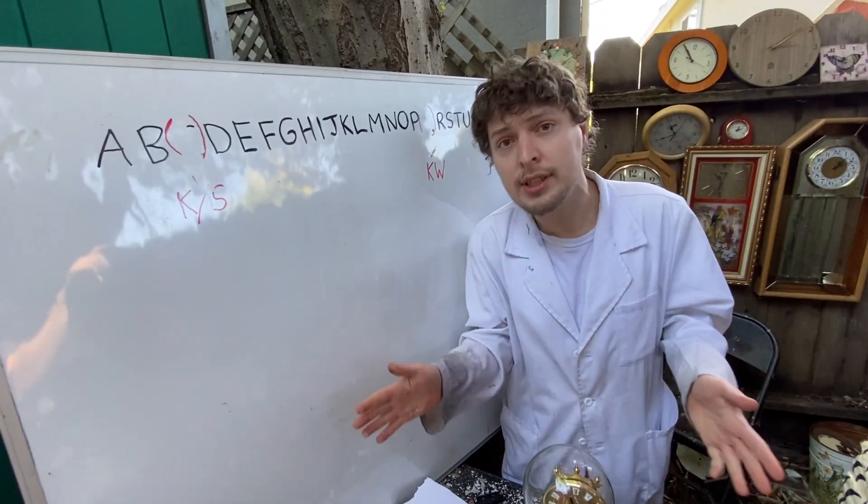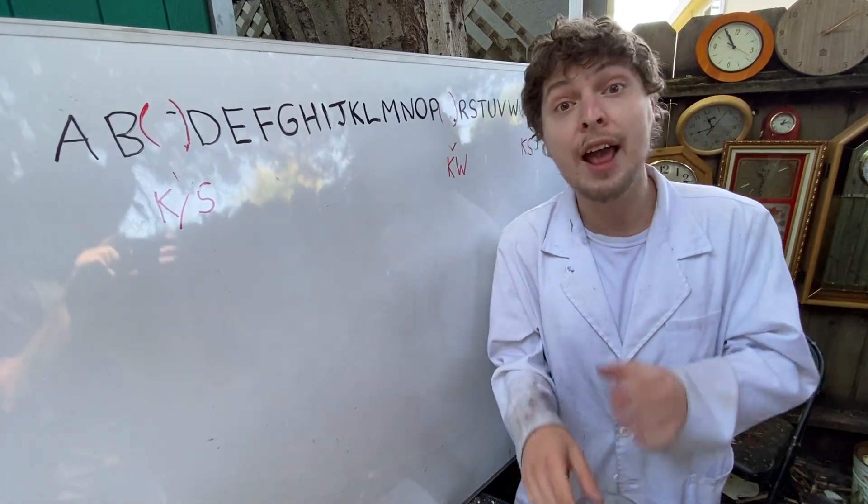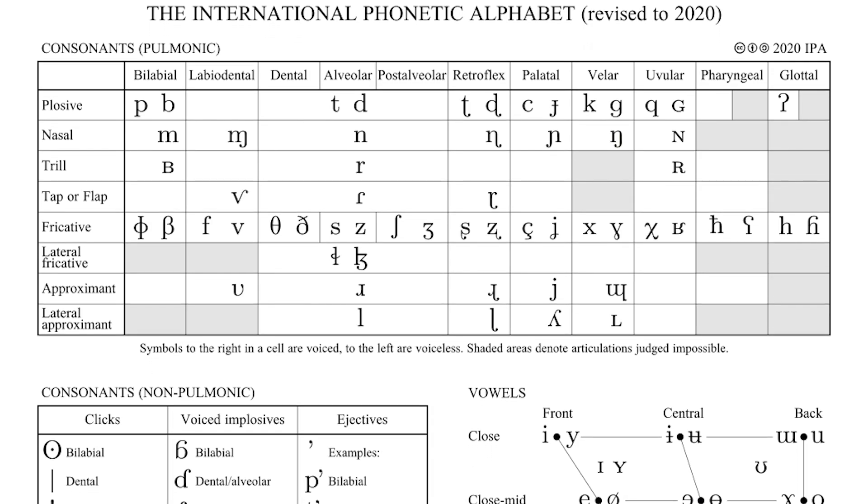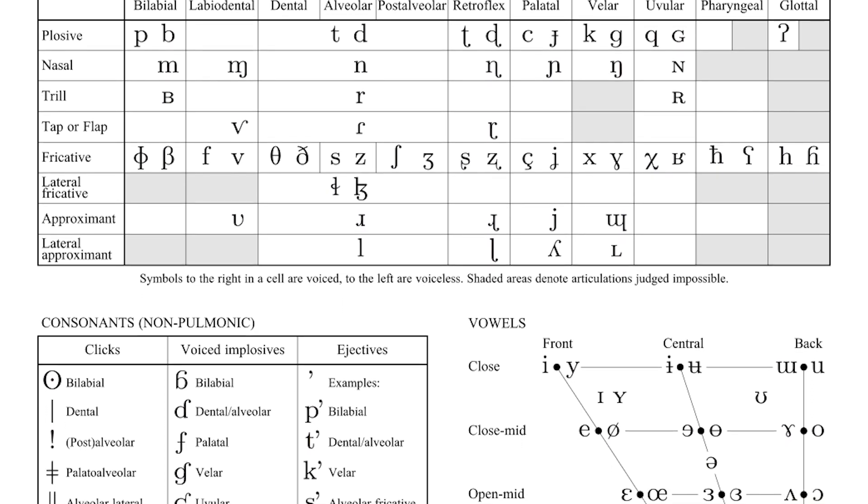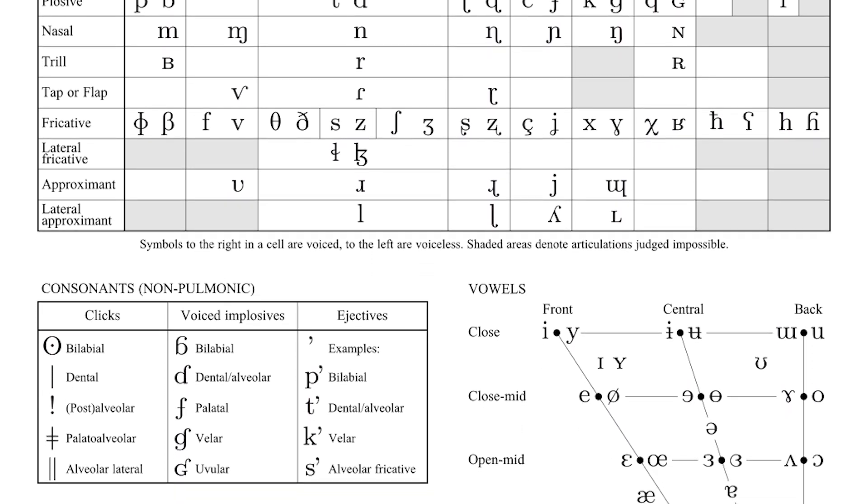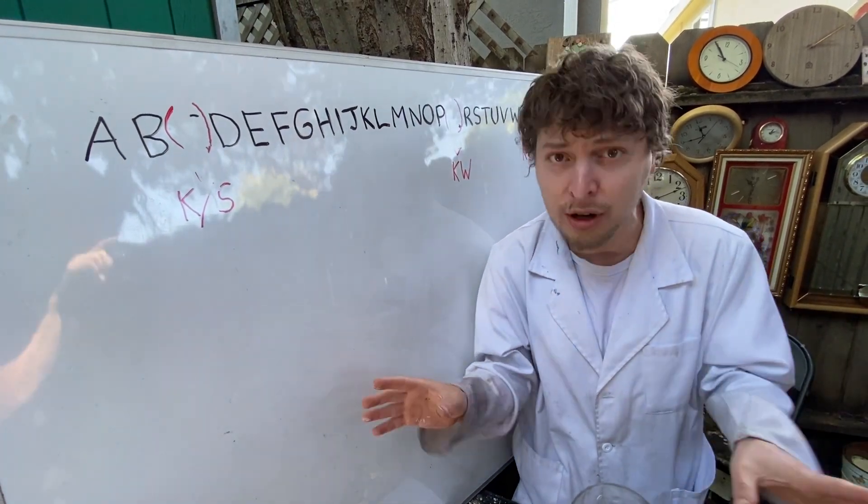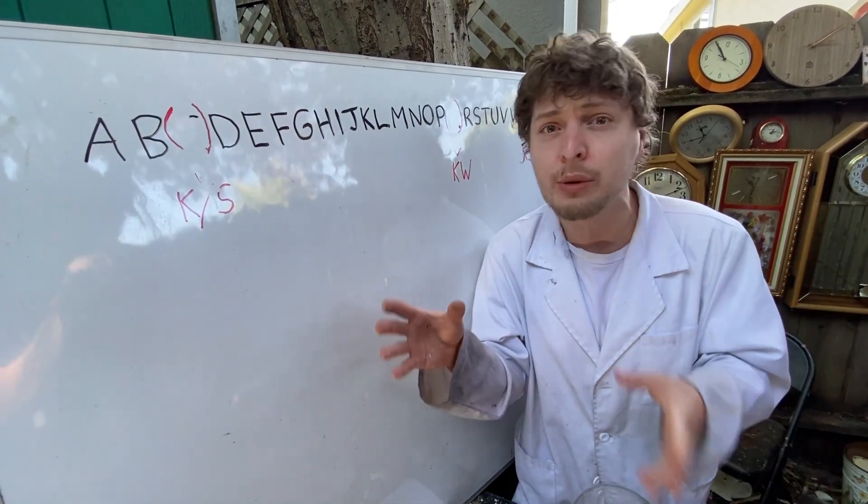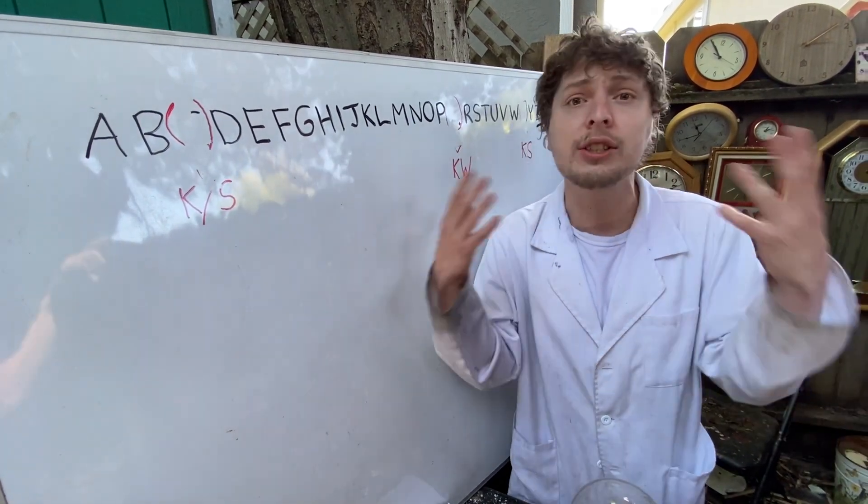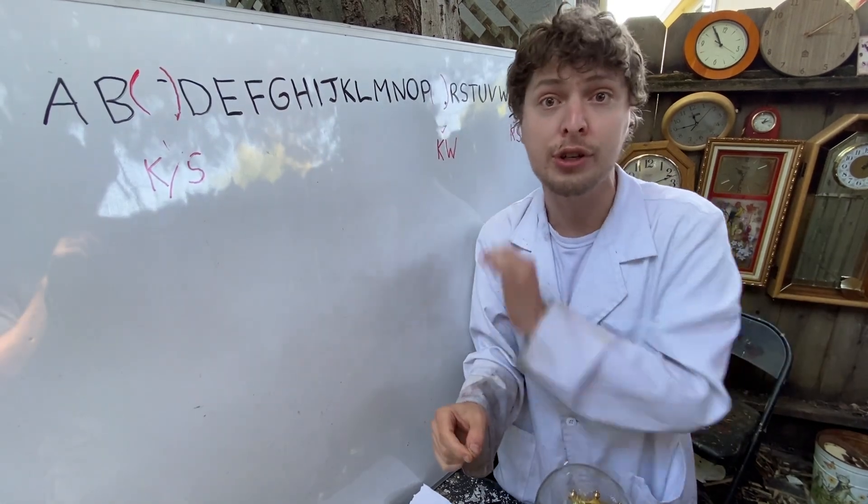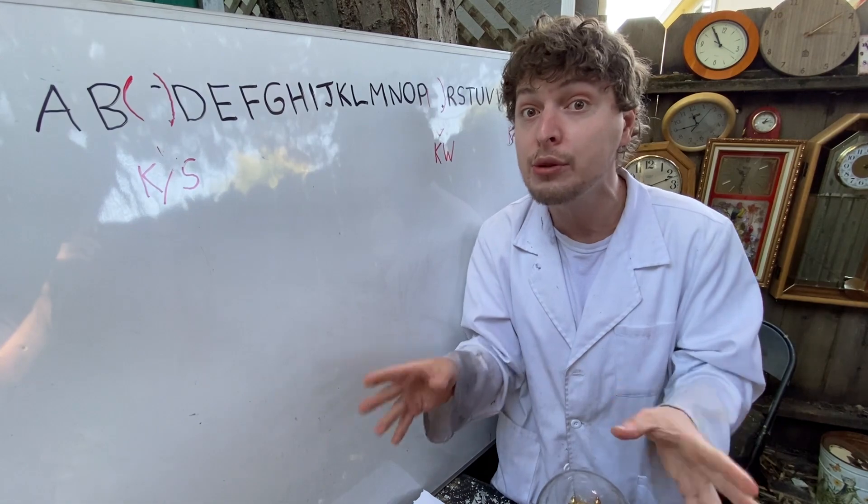To catalog all the consonant sounds that we use, there is something called the International Phonetic Association, and they make a chart that's pretty cool that shows their way of writing out all of the consonant sounds. I'll flash that chart here, but it's a little bit confusing because there's all sorts of sounds on there, written in ways you don't know, and it includes some sounds that we don't really use much in English. Let me show you my version of the chart that includes all of the consonant sounds that we commonly use in English.